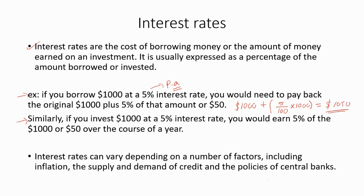Similarly, if you invest $1000 at a 5% interest rate, you would earn 5% of the $1000, or $50, over the course of a year. Which means at the end of one year, you will receive $1050, which is the total of the initial amount and the interest earned on the deposit.